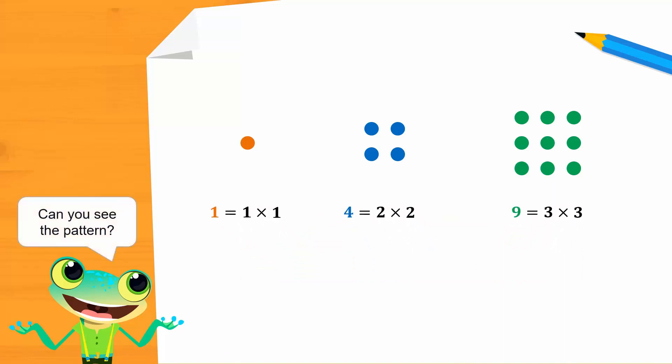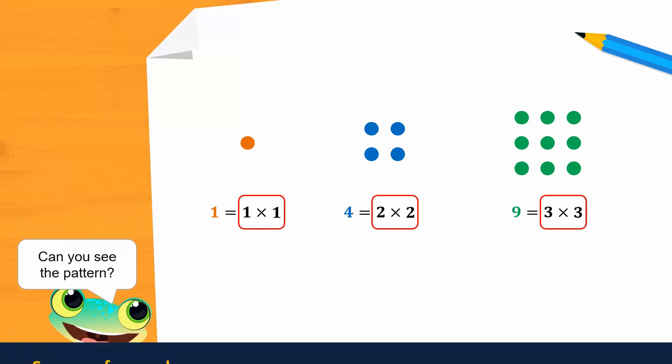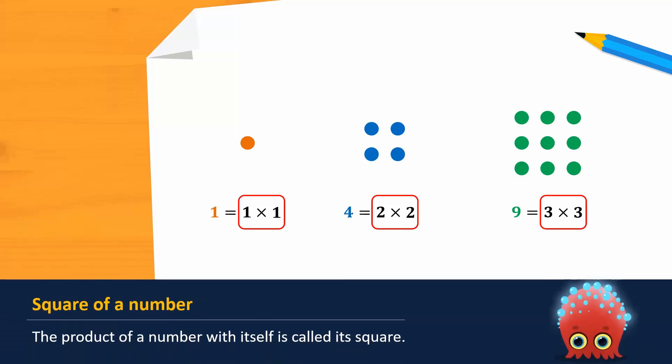Do you notice any patterns in these three statements? Each number 1, 4, and 9 is the product of a number that is multiplied by itself. The product of a number multiplied with itself is called its square.